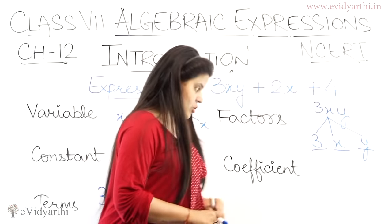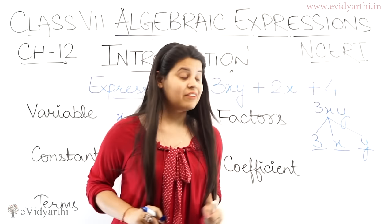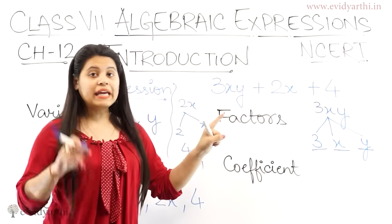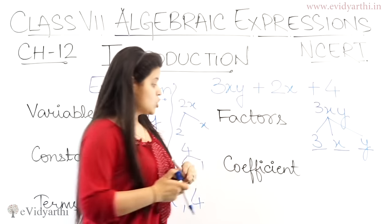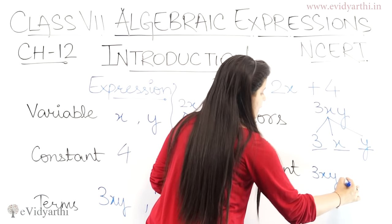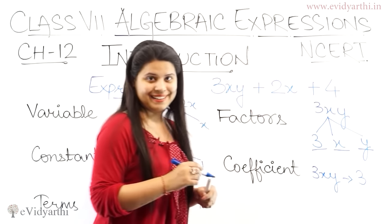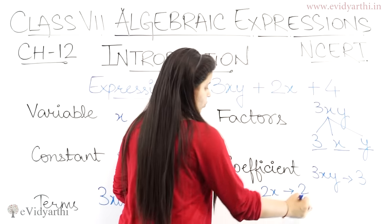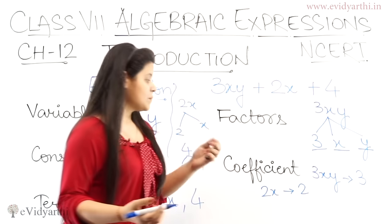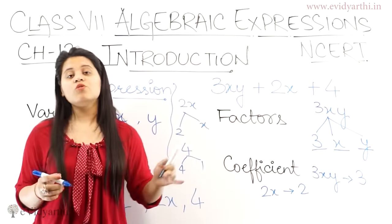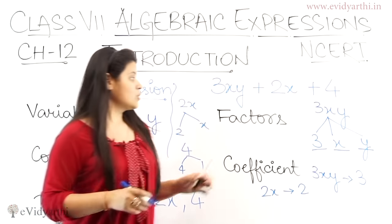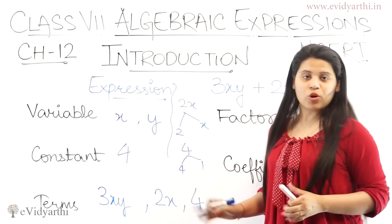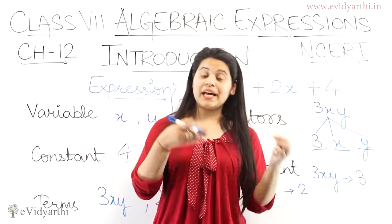Uske baad aata hai coefficient. Coefficient hota hai numeric factor. Numeric factor means: jaise 3xy hai — term hum ne li 3xy. Ismein x aur y variable hai. Number kaun sa hai? 3. So agar hum 3xy ki baat kare, to 3xy ka coefficient hai 3. Similarly, 2x ki baat kare, to iska coefficient hai 2. Aur 4 toh already as it is hai. So jo numeric factor hoga, woh iska coefficient hoga.